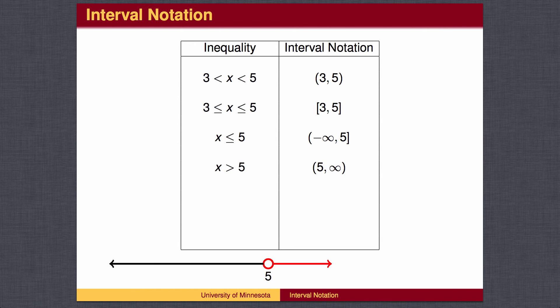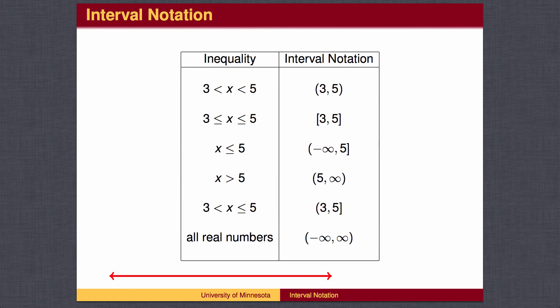When x is greater than 5, we use 5 as the left boundary, and we can go as far as we want to the right. We can mix and match parentheses and brackets. For all real numbers, we go from negative infinity to infinity.